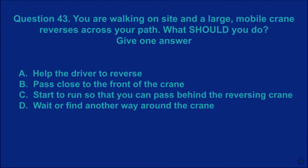Question 43: You are walking on site and a large mobile crane reverses across your path. What should you do? Give one answer. A: help the driver to reverse. B: pass close to the front of the crane. C: start to run so that you can pass behind the reversing crane. D: wait or find another way around the crane. The correct answer is D.